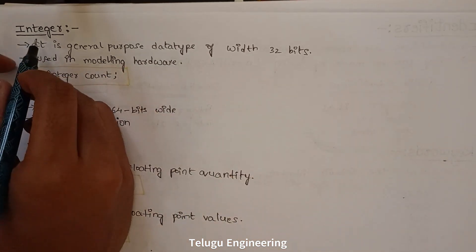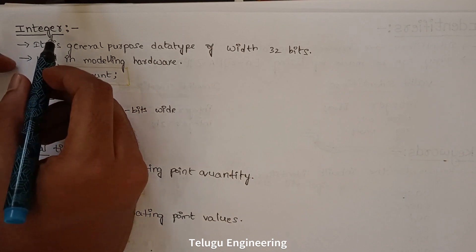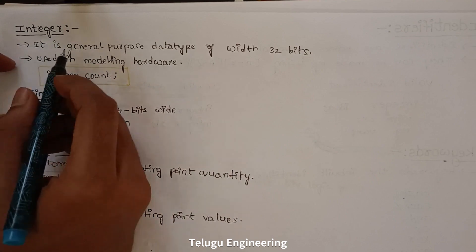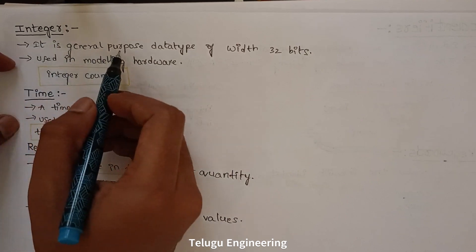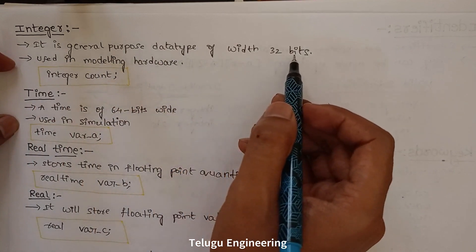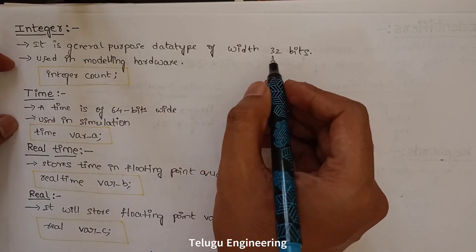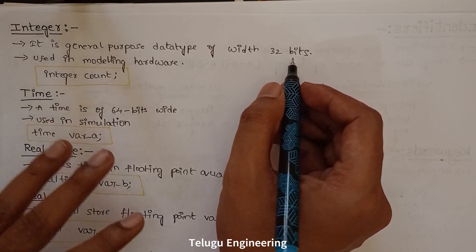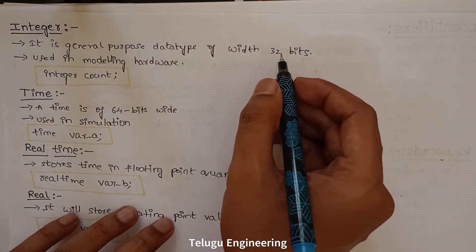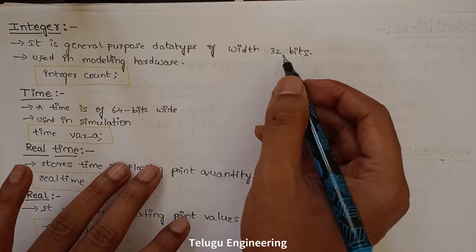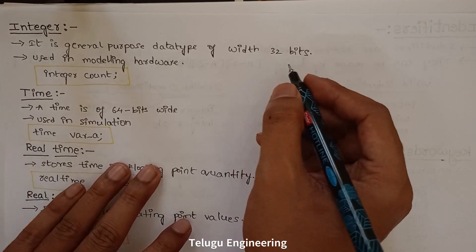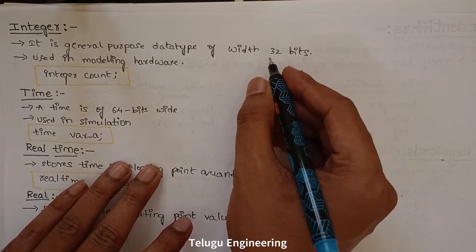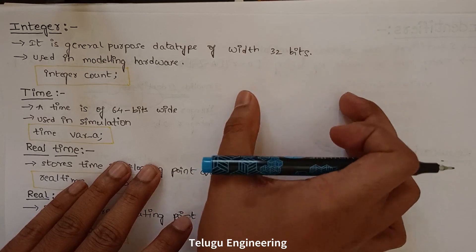First, we have integer. Integer is most widely used. In Verilog, integer is a general purpose data type of width 32 bits. So the size is 32 bits, and any value of 32 bits is stored in the integer. Integer can hold a value up to 32 bits. If you have that width, we can store the value in the integer.